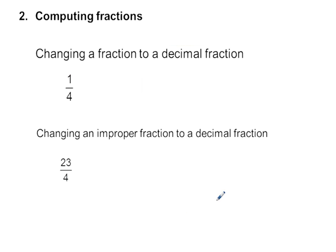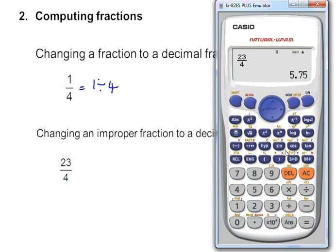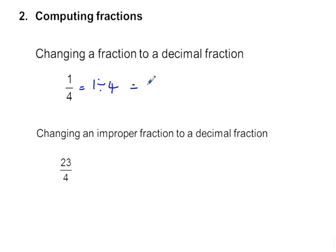When we change a fraction to a decimal fraction, what this actually means is one divided by four. And what we're going to do, we're just going to do it on the calculator. So I would say one divided by four equals a quarter. That is your common fraction. We want to change it to a decimal. So the answer is zero comma two five.